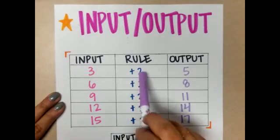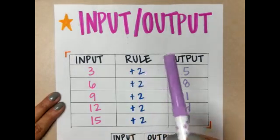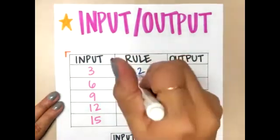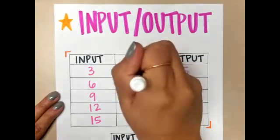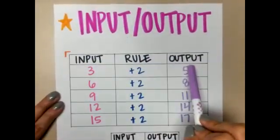Whether it says add 2, subtract 2, multiply by 2, multiply by 5. Whatever the rule is, I'm going to use that rule and apply it to my input number to get the output number.